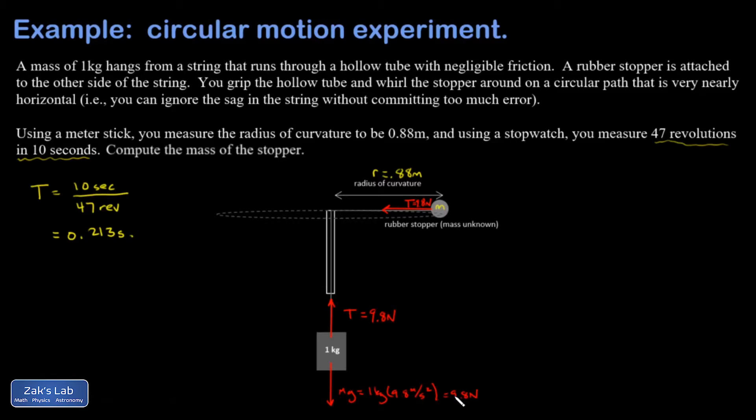This mass is in uniform circular motion. I should mention that we're going fast enough that the path is very nearly horizontal. In any real experiment like this, you've got to have a little bit of sag in the string because the tension has to have an upward component to hold up the mass against gravity. We're going so fast that it causes almost no error at all to just ignore that subtlety.